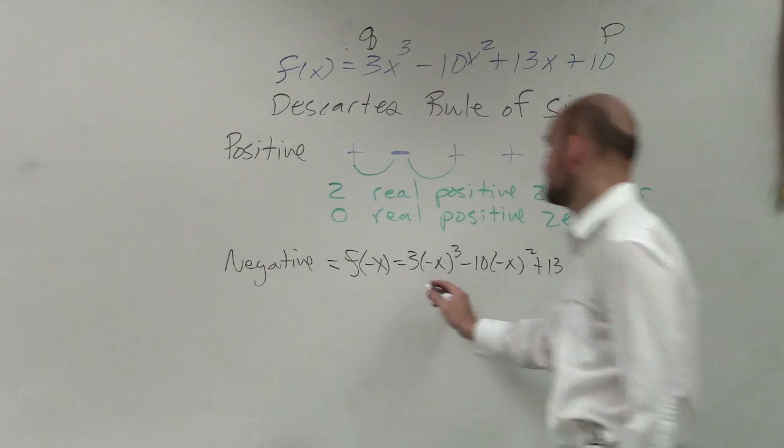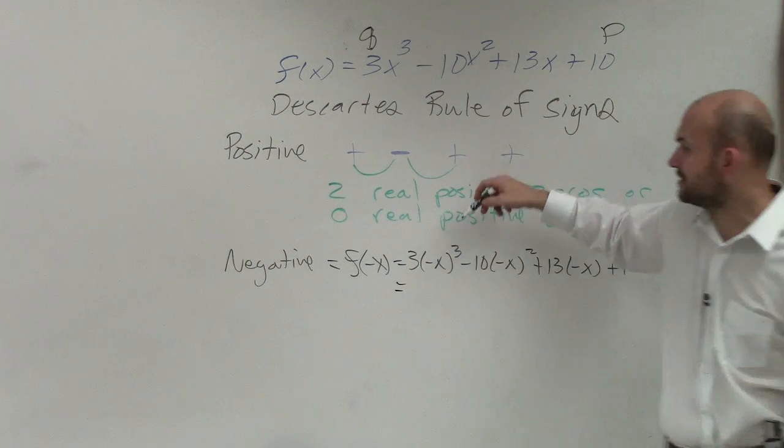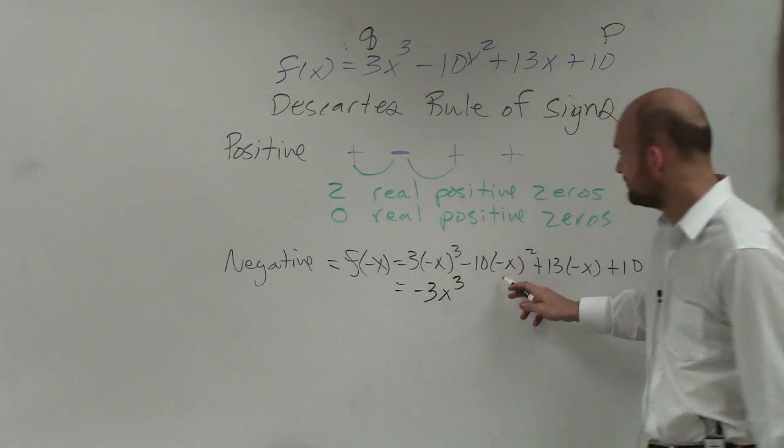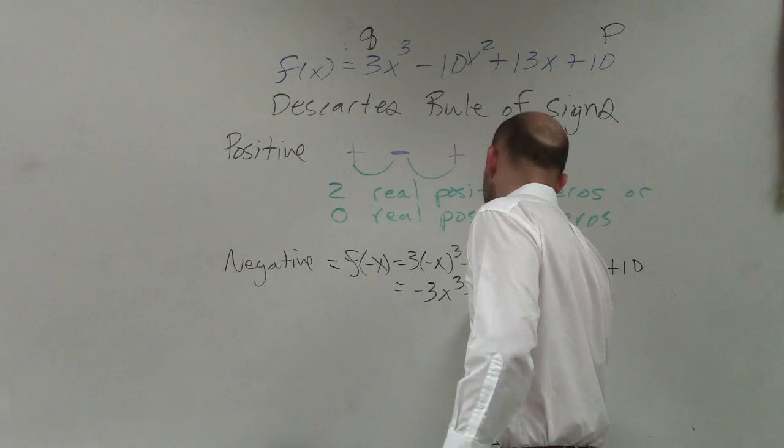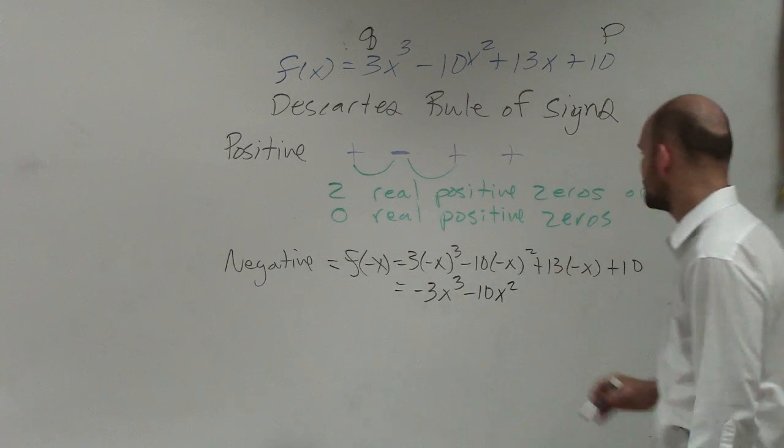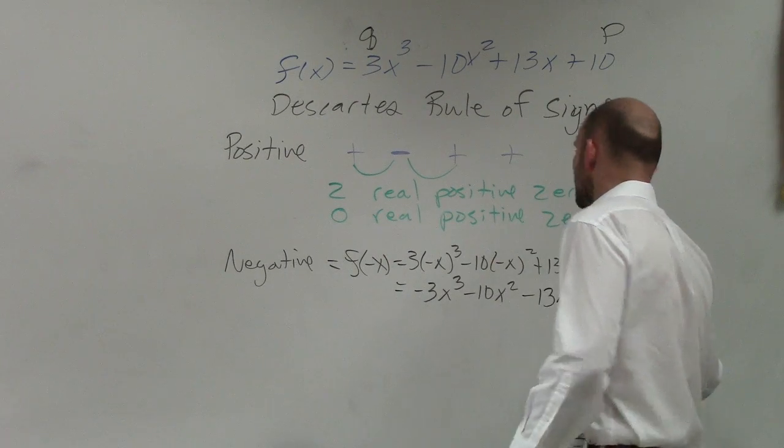When doing this, any negative number raised to an odd power is negative. Negative x cubed times 3 will be -3x³. Any negative number squared is positive. Positive times -10 will be -10x². This -x times 13 is -13x + 10.